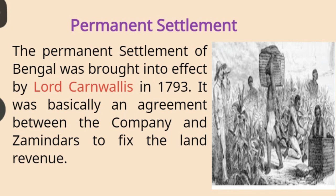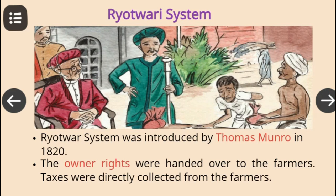The Permanent Settlement of Bengal was brought into effect by Lord Cornwallis in 1793 AD. It was basically an agreement between the company and the zamindars to fix the land revenue. Ryotwari System: It was introduced by Thomas Munro in 1820. The ownership rights were handed over to the farmers, and the taxes were directly collected from the farmers.